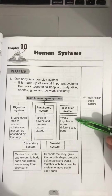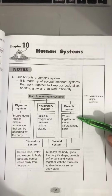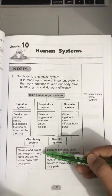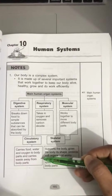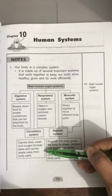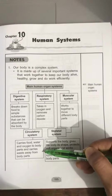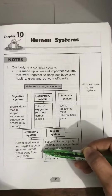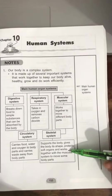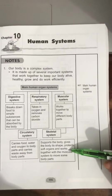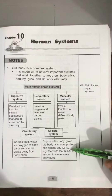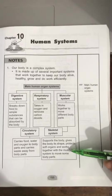The function of the muscular system is that it works together with the skeletal system to move different body parts. The function of the circulatory system is to carry food, water, and oxygen to body parts and carry waste away from body parts.